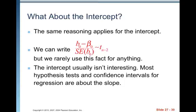What about the intercept? The same reasoning applies for the intercept. We can write B naught minus beta naught over the standard error of B naught. And we use the T distribution with N minus two degrees of freedom. But we rarely use this fact for anything.